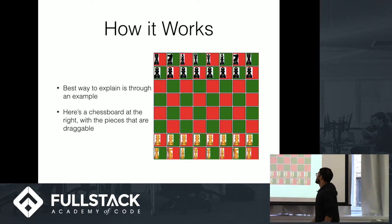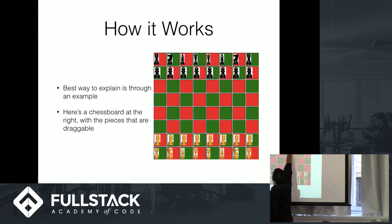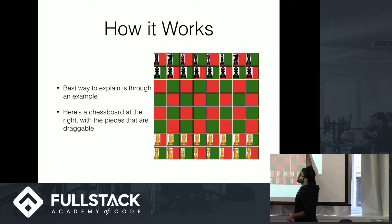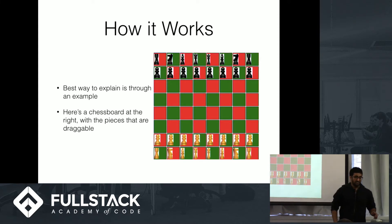It's a 2D array. Basically it goes row 1, row 2, row 3, then column 1, column 2, column 3. So this would be one array of 8 elements — 8 objects, rather. This would be an array of 8, and so forth. It's kind of important to know — I build off of this.